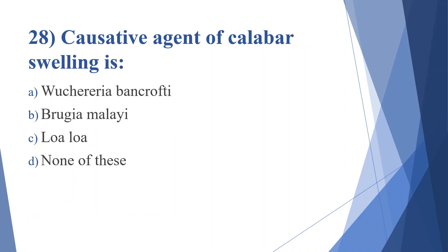Twenty-eighth question: causative agent of Calabar swelling is. Option A: Wuchereria bancrofti. Option B: Brugia malayi. Option C: Loa loa. Option D: none of these. Answer is option C, Loa loa.